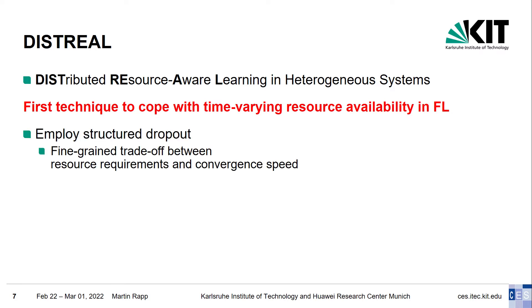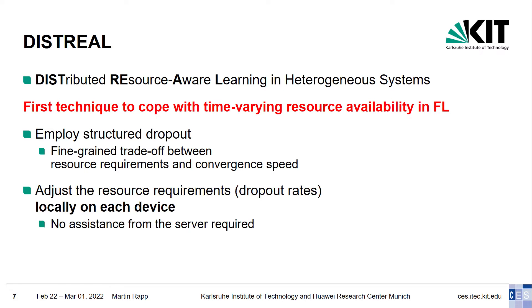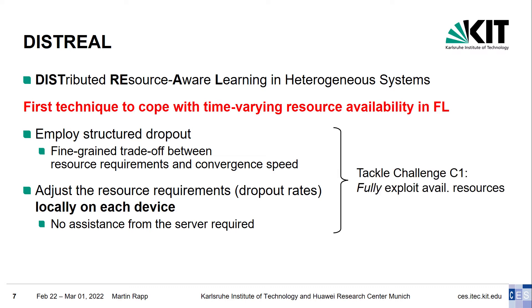We employ structured dropout on the devices, where in each mini-batch of local training a random subset of the neural network is dropped. Dropout allows for a fine-grained tradeoff between computational resource requirements and the convergence speed. We adjust the resource requirements to the available resources locally on each device by tuning the dropout rates — no assistance from the server is required, which maintains scalability by avoiding the server needing to track resources on each device and minimizing signaling overhead. It also enables fast adaptability to changes. These two contributions tackle the first challenge: fully exploiting all dynamic available resources.